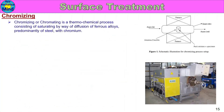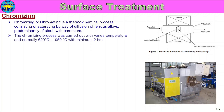Chromizing, or chromating, is a thermochemical process consisting of saturating, by way of diffusion, ferrous alloys — predominantly steel — with chromium.